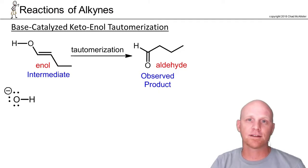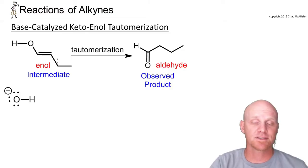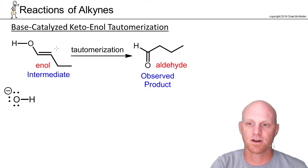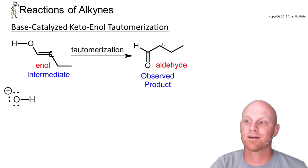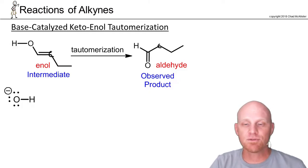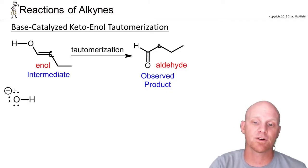Now we'll look at the base-catalyzed keto-enol tautomerization that takes place at the end of hydroboration oxidation. In this case, it's still just two proton transfer reactions. We're going to have to deprotonate the oxygen we see here, and we're going to have to protonate this carbon right here — that carbon has two H's in the product. So that's the two things we'll need to do: one protonation, one deprotonation. Under basic conditions, you deprotonate first.